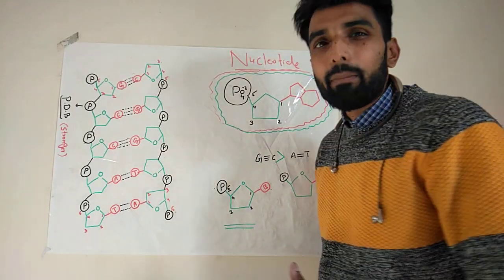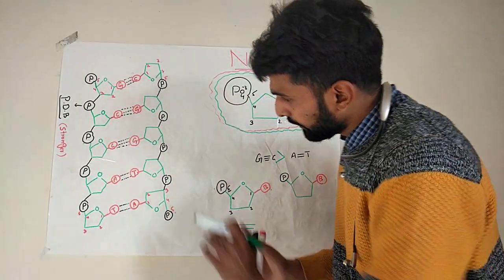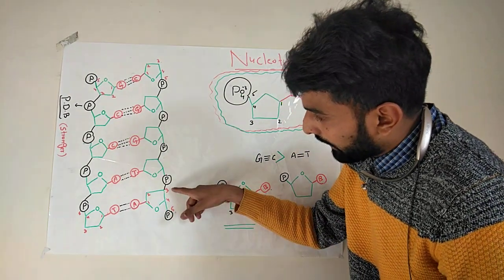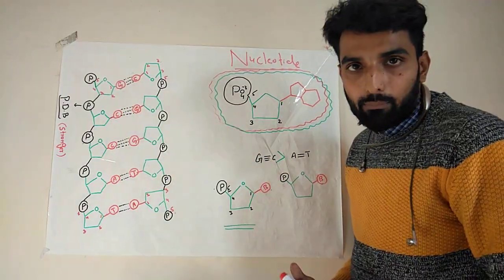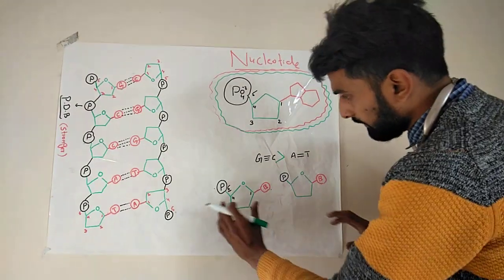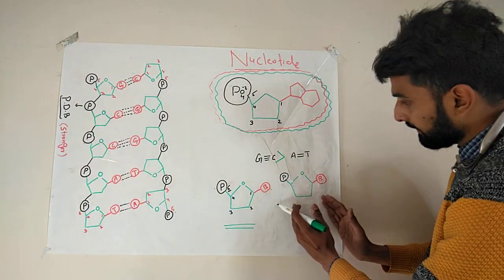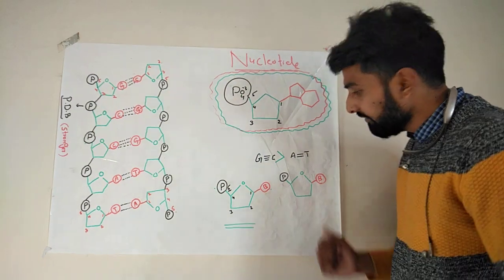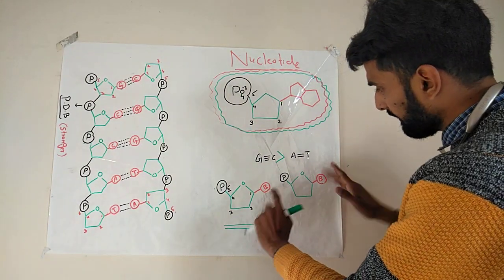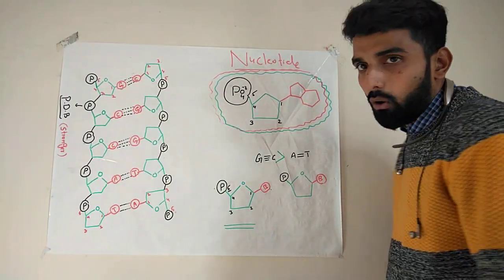Now let's talk about how the complementary strand is formed. For the complementary strand, the nucleotide is present but in the opposite direction — the oxygen is downward and carbon number three and carbon number two are on the upside. You can see that for one nucleotide of one strand and the nucleotide of the complementary strand, both bases are very far away from each other, so it's not easy for them to make a bond.